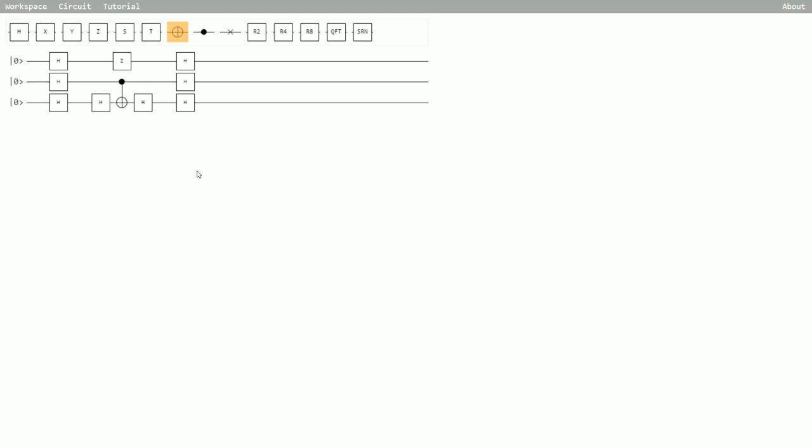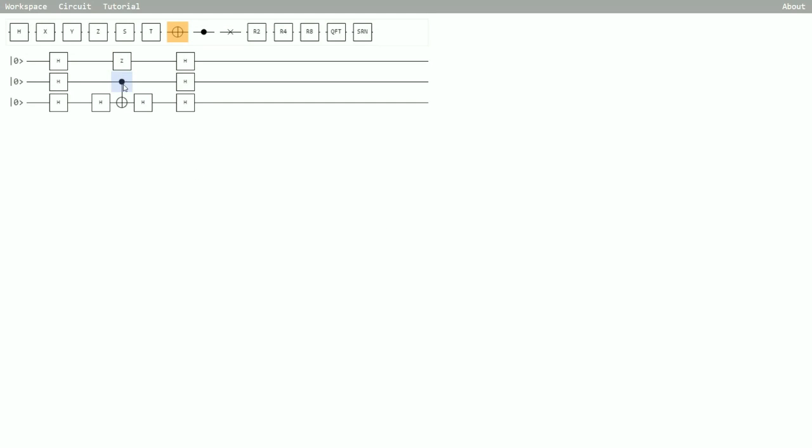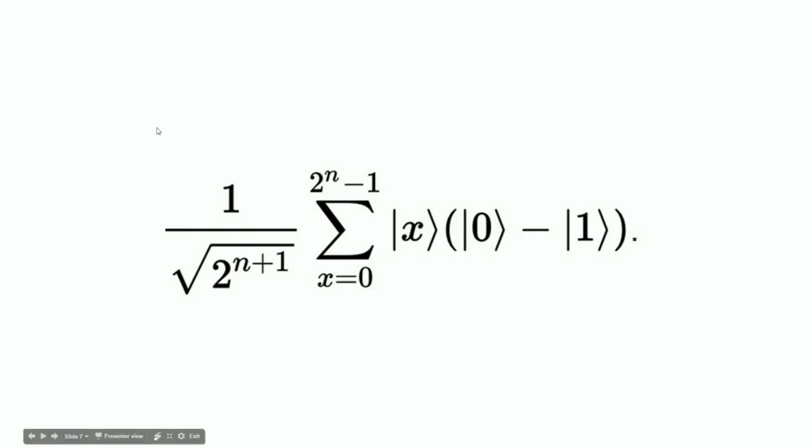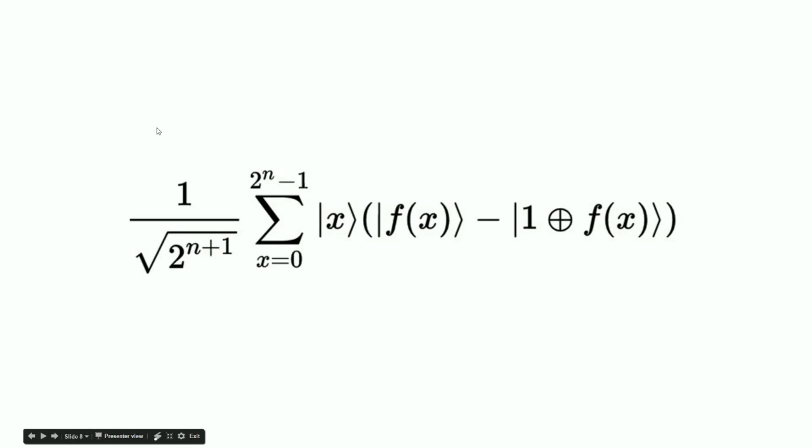So, if you go back to the simulator, the next step is applying the oracle function. Now, this is similar to the odd and even gate. It's a bit different, but the important point is that it also outputs a balanced number of zeros and ones. It's the same amount of zeros and ones. So, we can represent that oracle function by this equation here, where we're now essentially putting the different inputs of x into the oracle function.